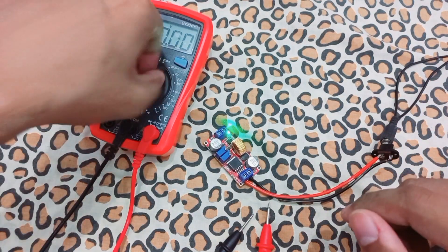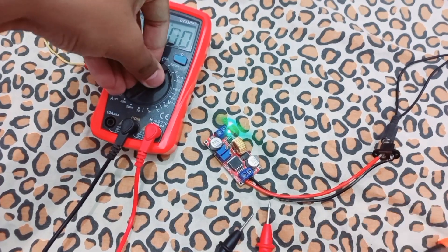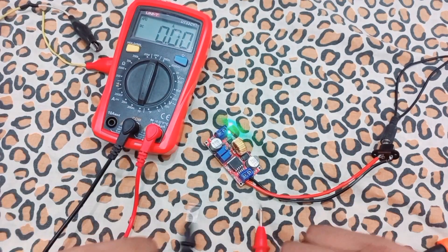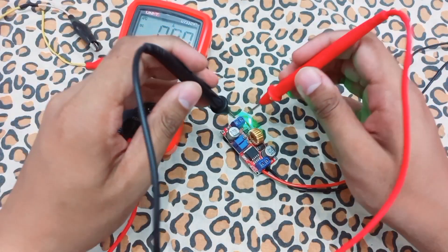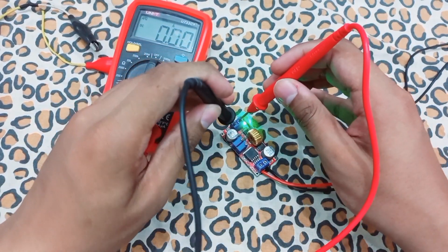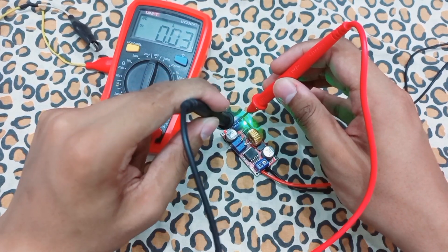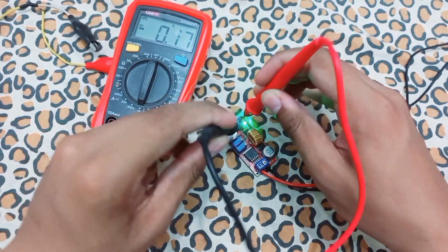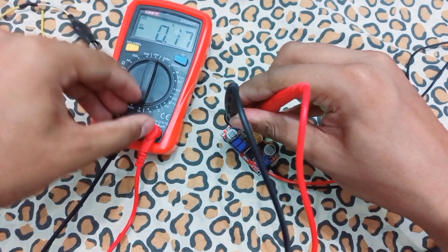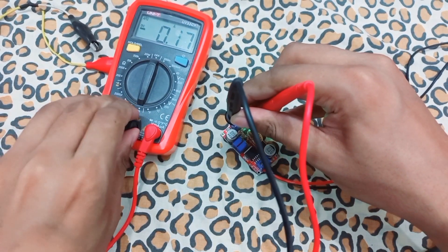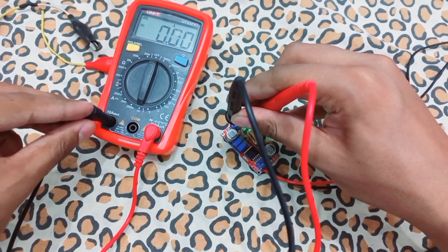For current testing we have to set the multimeter at current mode, this 10 amps. Let's connect to the 10 ampere.